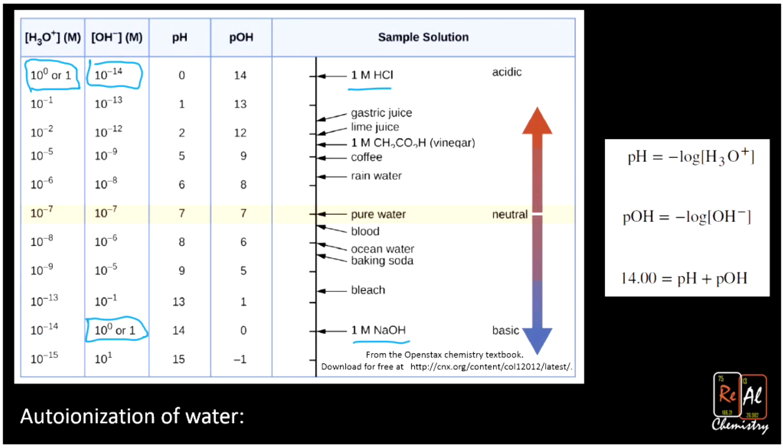Now, another interesting fact here is if you look at the pH and the pOH, they always add up to 14. So, for example, here 14 and 0 give us 14, or 1 and 13 give us 14, or for pure water, 7 and 7 give us 14.